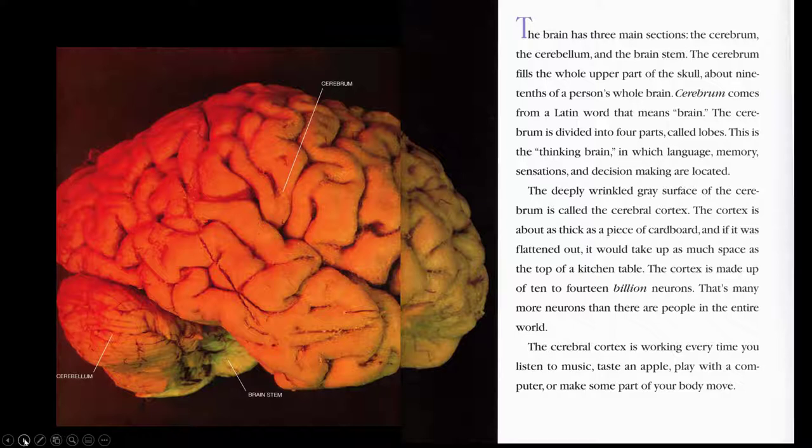The deeply wrinkled gray surface of the cerebrum is called the cerebral cortex. The cortex is about as thick as a piece of cardboard, and if it was flattened out, it would take up as much space as the top of a kitchen table. The cortex is made up of 10 to 14 billion neurons. That's many more neurons than there are people in the entire world. The cerebral cortex is working every time you listen to music, taste an apple, play with a computer, or make some part of your body move.